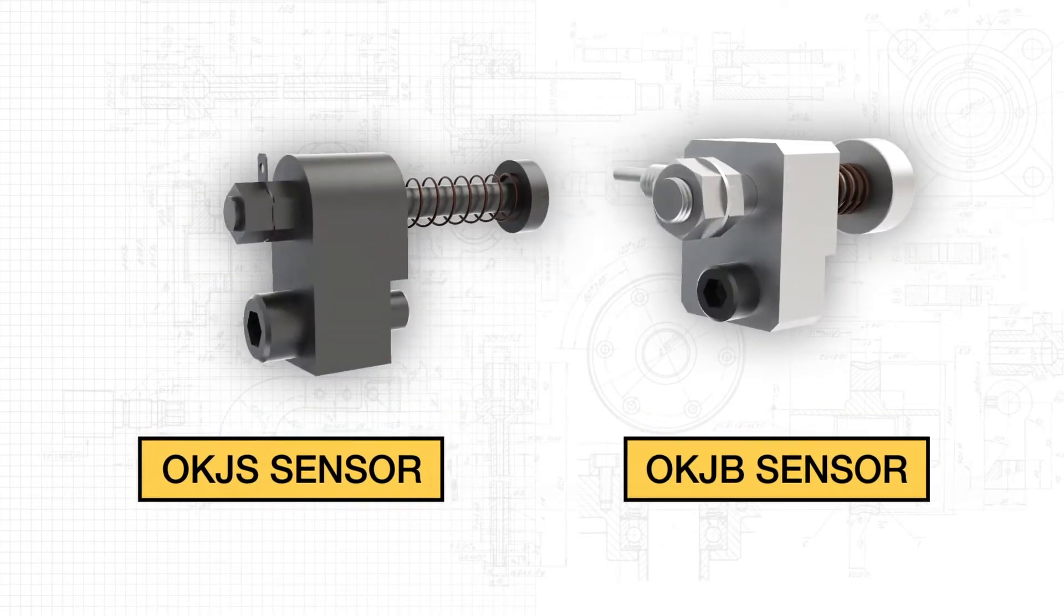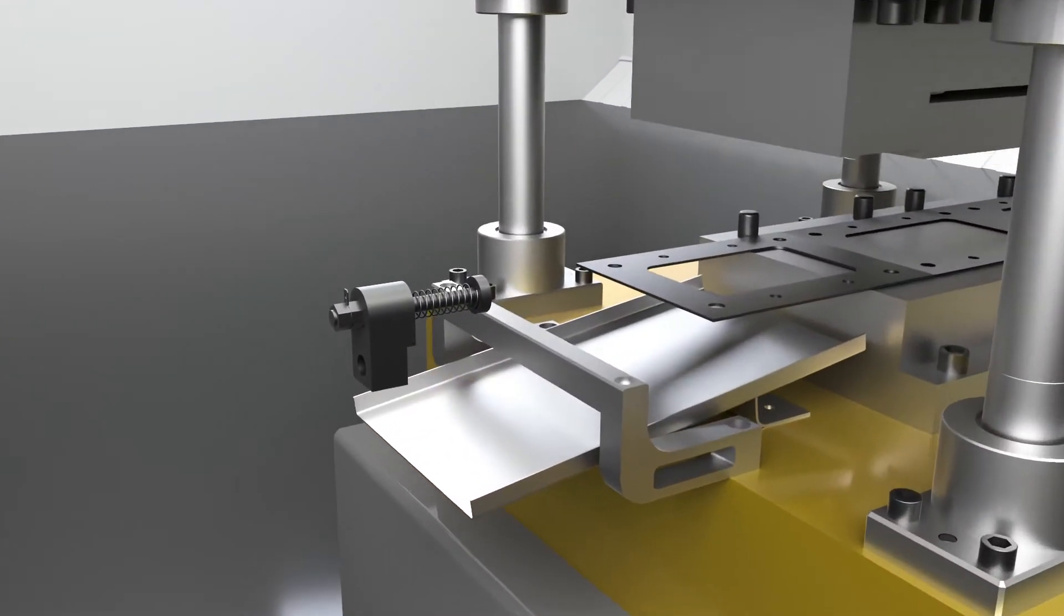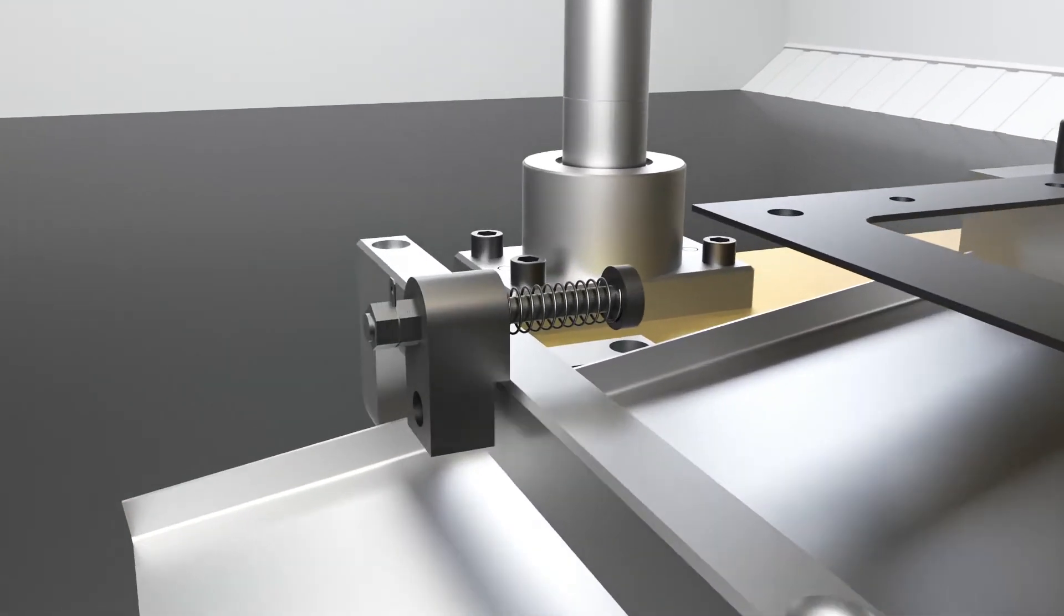Misumi has two alternatives to the whisker wire. The Misumi OKJB sensor is able to narrow down the position of the workpiece compared to the whisker wire.